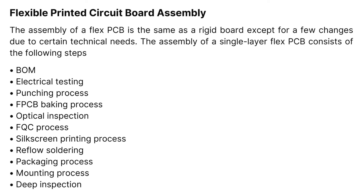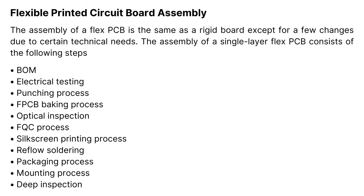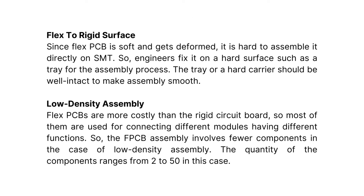Flexible printed circuit board assembly. The assembly of a flex PCB is the same as a rigid board except for a few changes due to certain technical needs. The assembly of a single-layer flex PCB consists of the following steps: electrical testing and punching process, FPCB baking process, optical inspection, FQC process, silk screen printing process, reflow soldering, packaging process, mounting process, deep inspection, and flex to rigid surface.